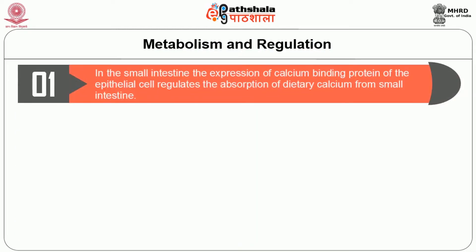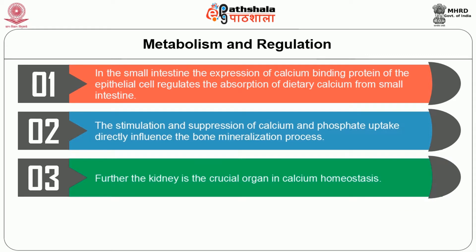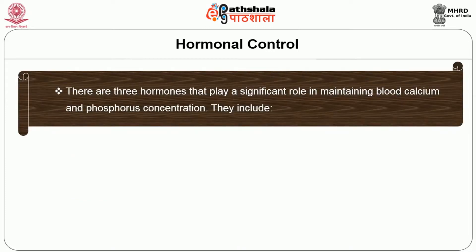Now we will see what happens to absorbed calcium through metabolism and regulation. In the small intestine, the expression of calcium-binding protein in the epithelial cell regulates the absorption of dietary calcium. The stimulation and suppression of calcium and phosphate uptake directly influence the bone mineralization process. The kidney is the crucial organ in calcium homeostasis. In conditions of low calcium status, all calcium from the glomerular filtrate is reabsorbed and calcium status is maintained.